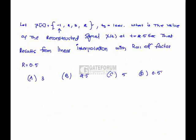So x(n) = -1, 2, 3, 2 are the samples. If the sampling time is 1 second, then what is the value of the reconstructed signal x(t) at t = 2.5 seconds, that results from linear interpolation with rolloff factor r = 0.5? Here, x(t) at t = 2.5 seconds is the average of the two samples at t = 2 seconds and t = 3 seconds. That is, 1/2 × (3+2), that is 2.5. Hence option B is correct.